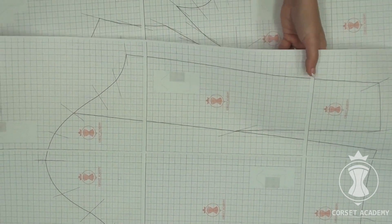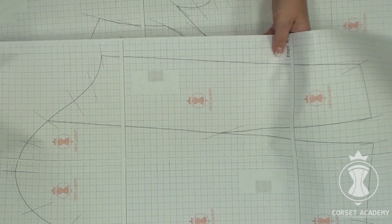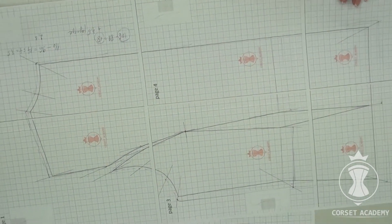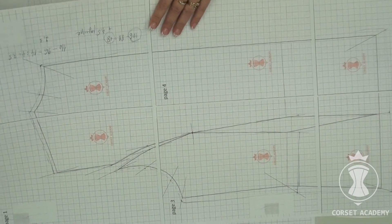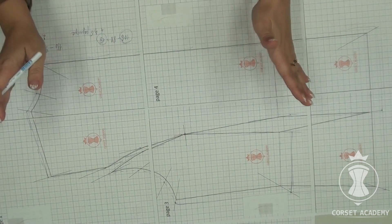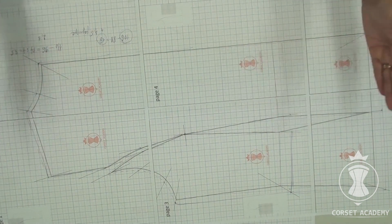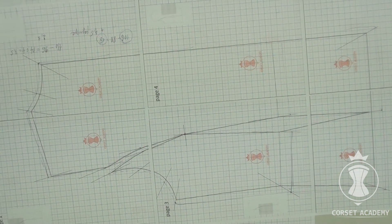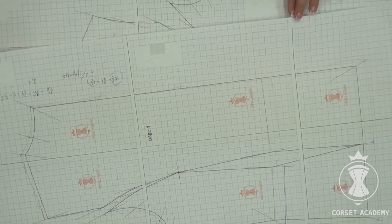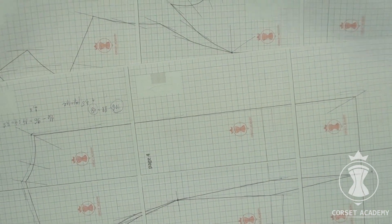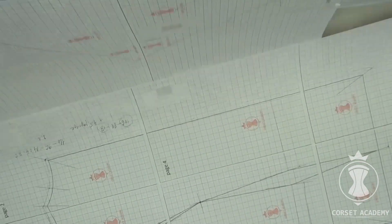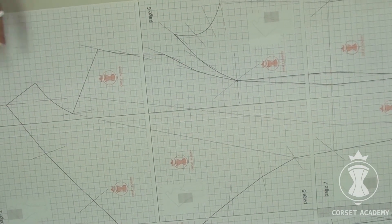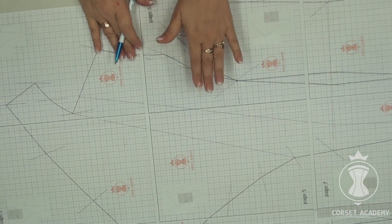Now, when we have adjusted by calculation the standard pattern of the jacket to the client's measurements, I highly recommend you check the correspondence of the new pattern with the client's measurements. Just at the time of ordering, you have to take the client's measurements for an ordinary classic jacket — the measurements which are necessary for cutting the shoulder garments.